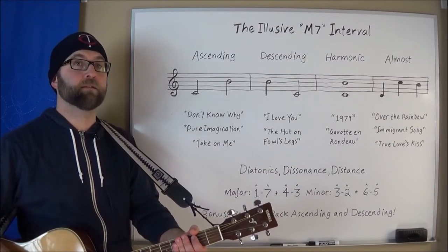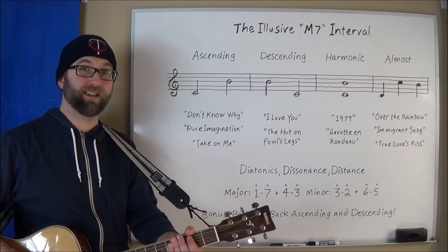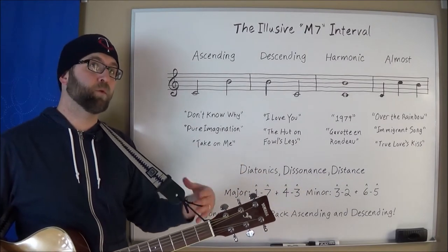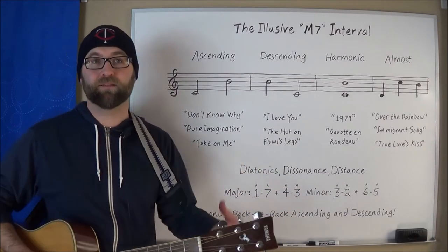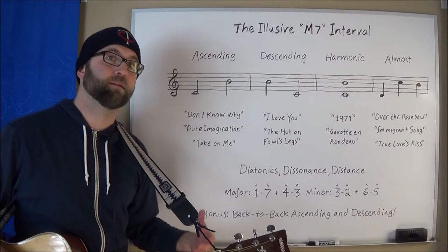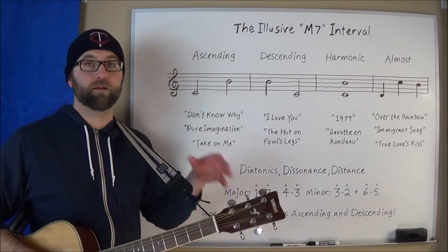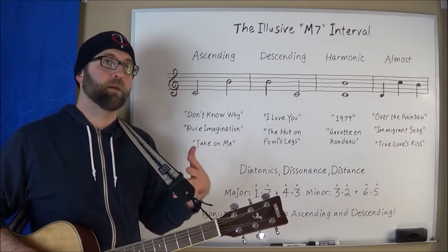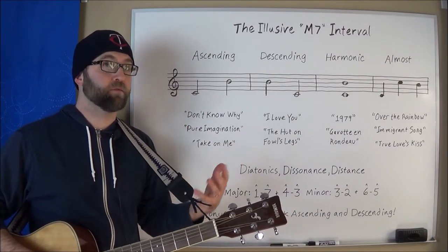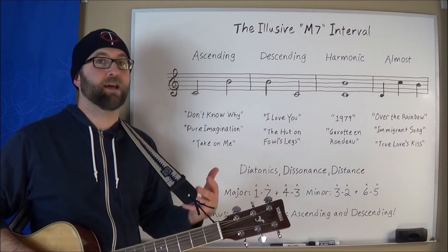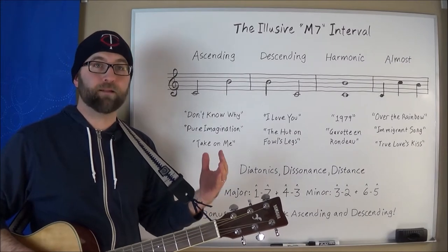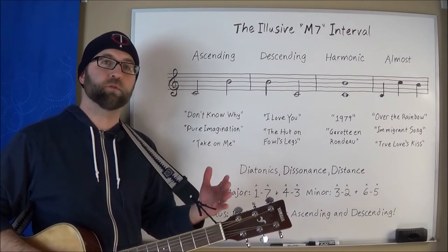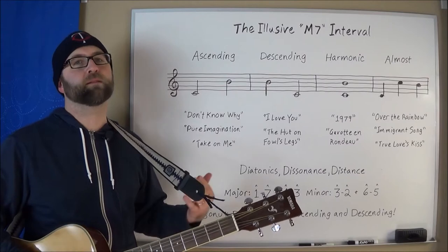But no matter how you slice it and no matter what diatonic mode you're in, only two intervals out of the seven possible are major sevens, contributing to their rarity. Next, this interval's got dissonance going against it — a word that basically translates as a sound that sounds ouchy to our human ears, and the reason for the ouchiness lies in the battling, conflicting sound waves that each note produces.